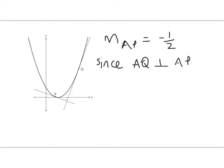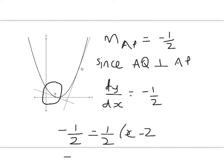So let's take a look at that on a slightly cleaner slide. Here's the diagram again. We know that the slope of AP is equal to negative 1/2, since AQ is perpendicular to AP. So all we've got to do now is to ask ourselves, where will we have a gradient that's equal to negative 1/2? So we're just going to solve that for x. Negative 1/2 is equal to 1/2 times (x - 2). Negative 1 equals x - 2. x is equal to 1.